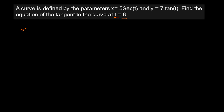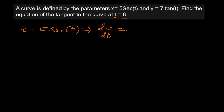So, x is equal to 5 sec t. We want to differentiate this — x is in terms of t — so we differentiate with respect to t. dx/dt: the derivative of sec t is sec t tan t, so this will be 5 sec t times tan t.